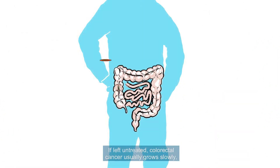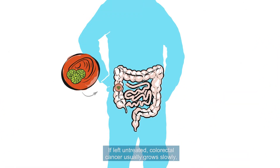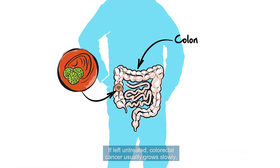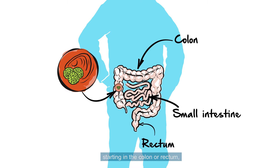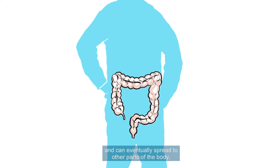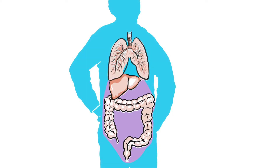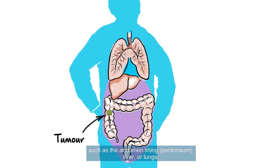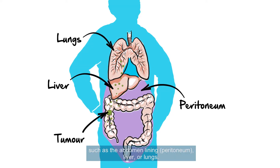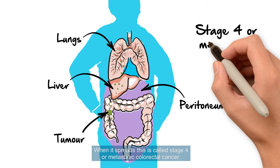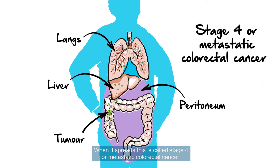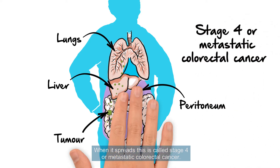If left untreated, colorectal cancer usually grows slowly, starting in the colon or rectum, and can eventually spread to other parts of the body, such as the abdomen lining, peritoneum, liver or lungs. When it spreads, this is called stage 4 or metastatic colorectal cancer.